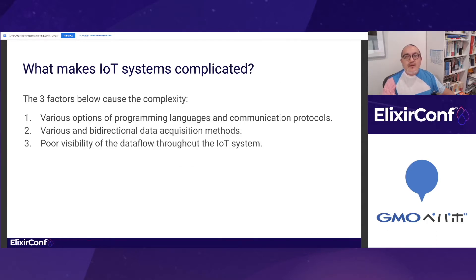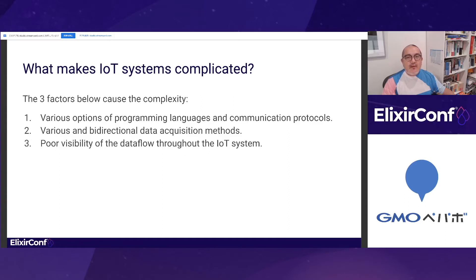There are three factors that cause such complexity. The first problem is which programming language and communication protocol we should use. The second problem is the methods of communication between the three layers — there are various methods to retrieve data from the device layer, and it can also be bidirectional. The last problem is that the code base for the data flow tends to be scattered around and hard to grasp.